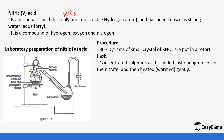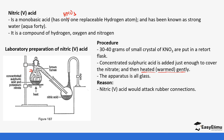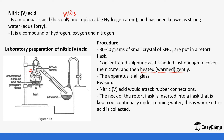Heat is one of the conditions required for this reaction. The apparatus are all glass, and the reason why they are all glass is because nitric acid attacks rubber — that is why we do not use rubber. The neck of the retort flask is inserted into a flask that is kept cool continually under running water, and this is where the nitric acid is collected.